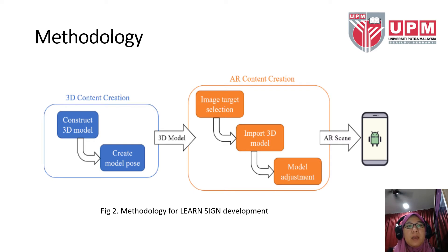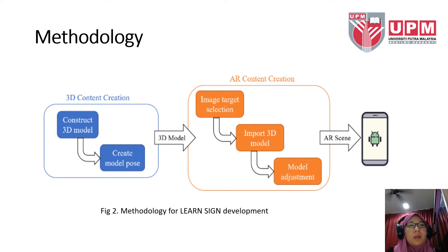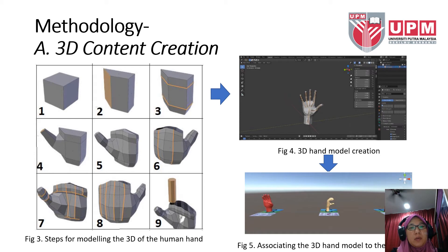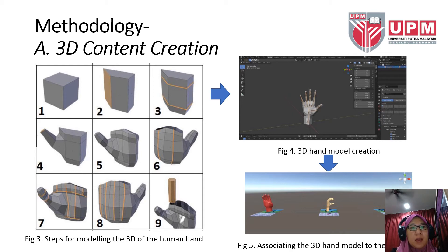In the 3D content creation phase, the 3D model is constructed using Blender software, which is an open source tool for a 3D creation suite. It supports the entire process of 3D development, from modeling to rigging, simulation, animation, rendering, motion, composition, and tracking. In the AR content creation phase, Unity software alongside the Vuforia extension is used to implement the augmented reality feature. Figure 3 shows the steps for modeling the 3D human hand. Since Blender is not an image-based modeling software, development from scratch is required, starting by creating a cube and shaping it step by step until it becomes the shape of a human hand.